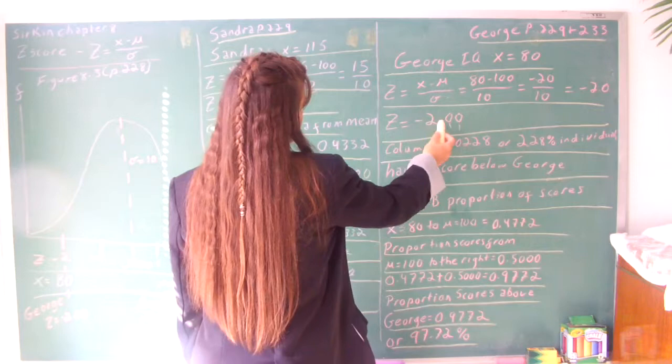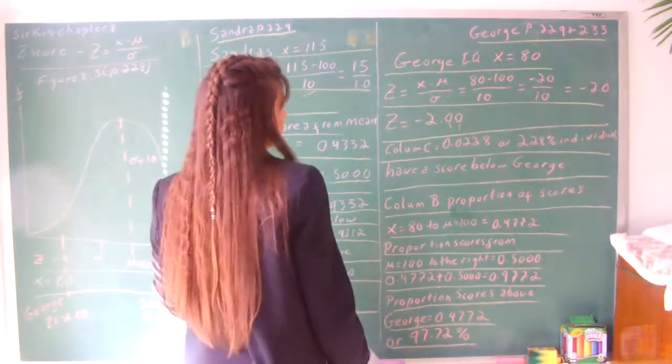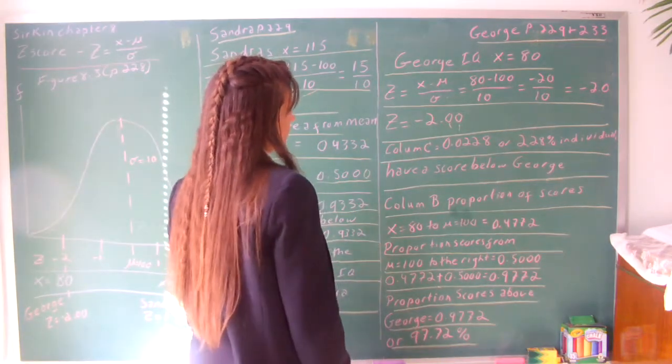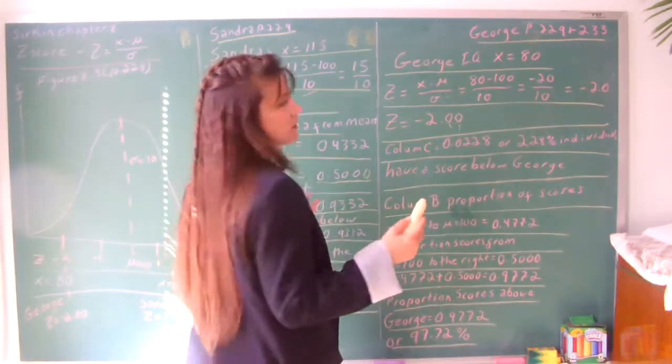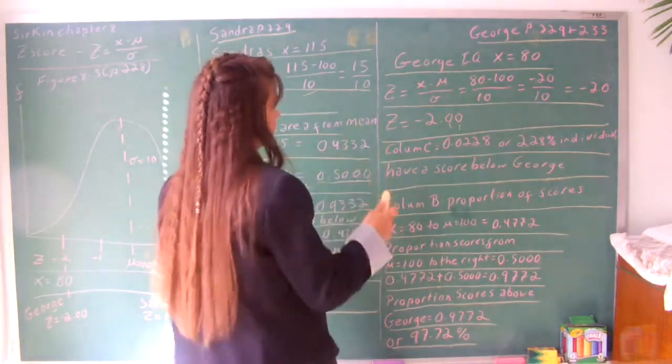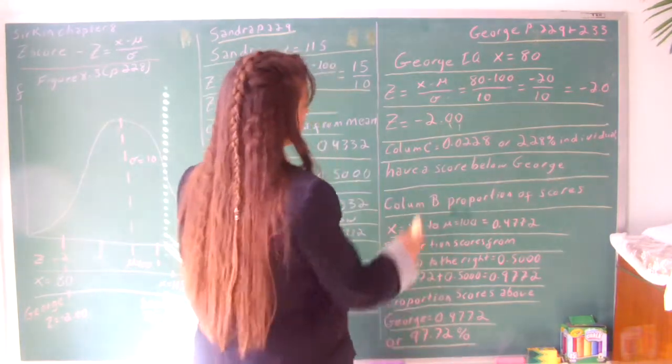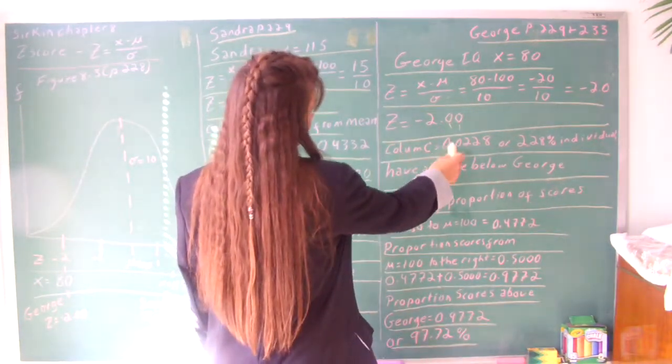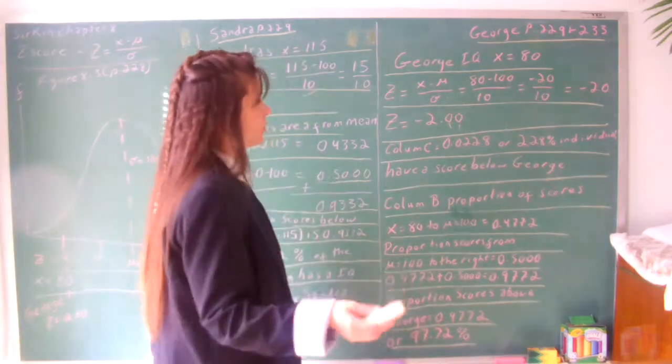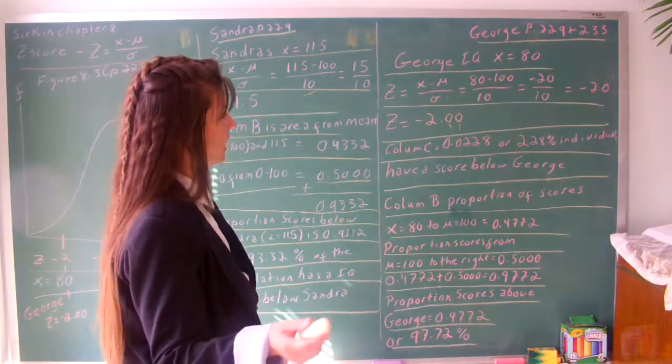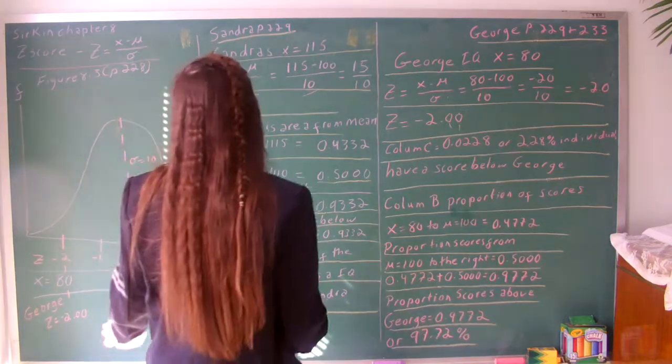So z equals negative 2.00. Now we look at column C in the textbook. Of course, it's going to show you the positive, which is fine. We look at the positive 2.00. So for column C, it's 0.0228, or 2.28% of individuals have a score below George's.